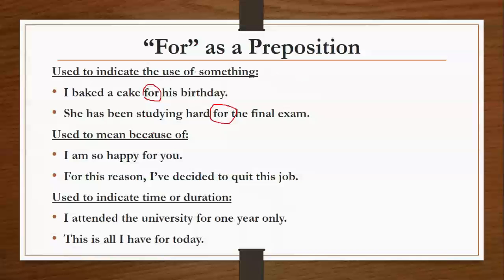Used to mean 'because of'. किसी चीज की वजह से — तब भी हम 'for' का use कर सकते हैं। 'I am so happy for you' — मैं तुम्हारे लिए बहुत happy हूँ। 'For this reason, I have decided to quit this job' — इस reason की वजह से मैं ये job छोड़ रही हूँ। Basically किसी चीज का reason देना।